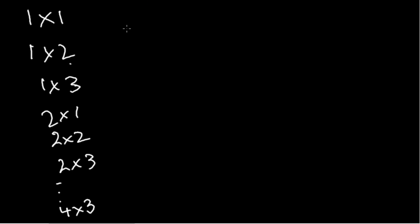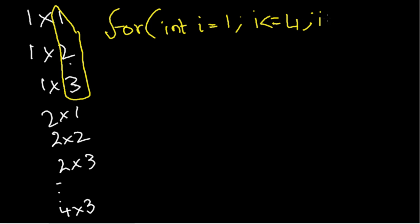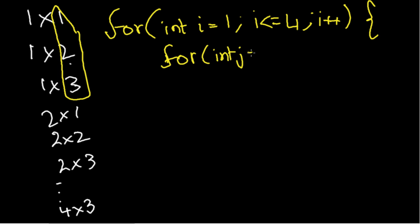What is being repeated here? In the inner part, 1, 2, and 3 is being repeated, and on the outside it's progressing. So we have: for (int i = 1; i <= 4; i++). Then inside we have: for (int j = 1; j <= 3; j++).